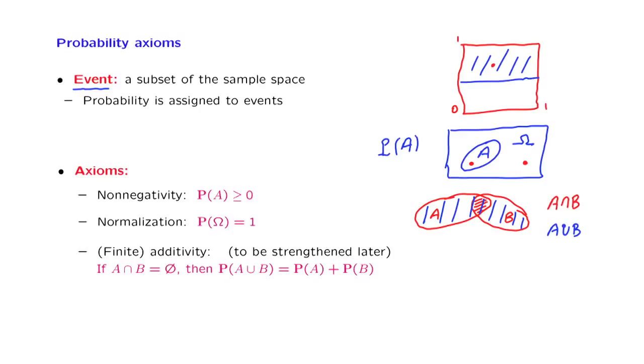After this reminder about set-theoretic notation, now let us look at the form of the third axiom. What does it say? If we have two sets, two events, two subsets of the sample space, which are disjoint. So here's our sample space, and here are the two sets that are disjoint. In mathematical terms, two sets being disjoint means that their intersection has no elements. So their intersection is the empty set, and we use this symbol here to denote the empty set.